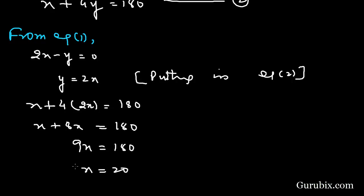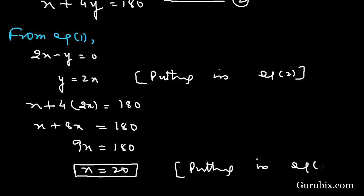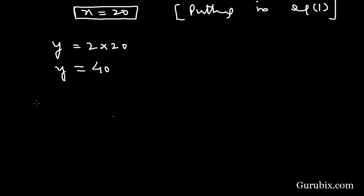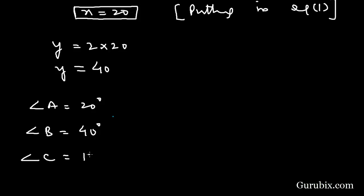Putting x equals 20 back into y equals 2x, we get y equals 40. Therefore, angle A equals 20 degrees, angle B equals 40 degrees, and angle C equals 3 times 40 equals 120 degrees. This is the solution of the question. Thank you.